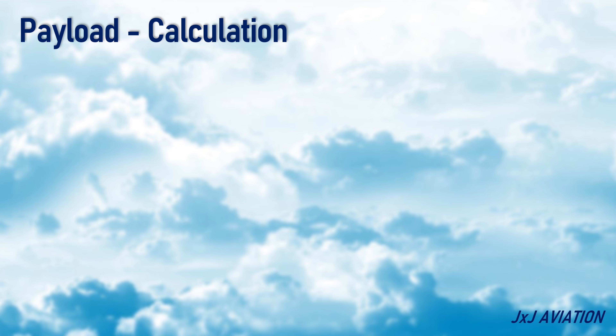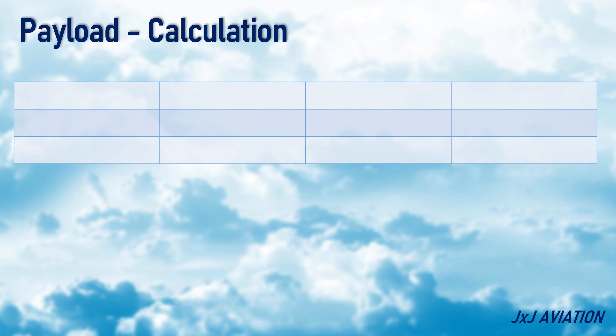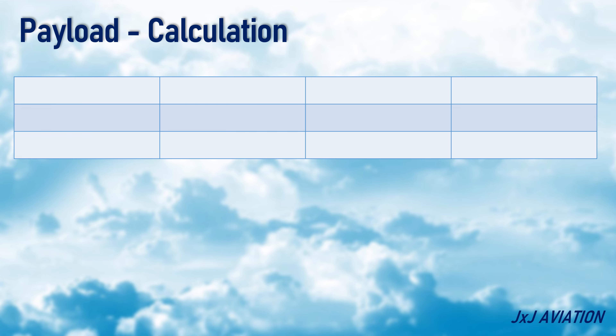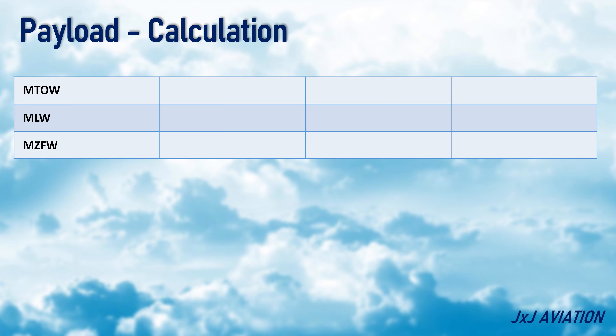Now let us start with the calculation of the payload. To easily calculate the payload, we can make a simple format as shown. We need to write the maximum approved regulatory weight — such as maximum takeoff weight, maximum landing weight, and maximum zero fuel weight — in the first column.